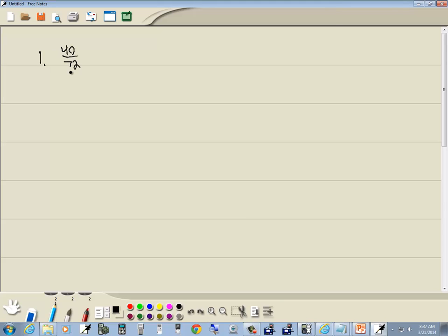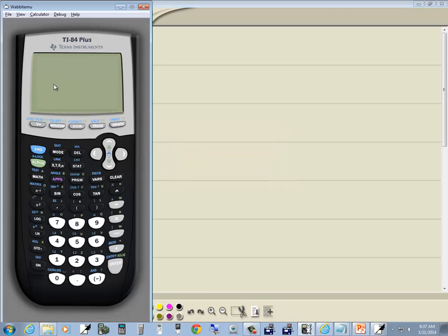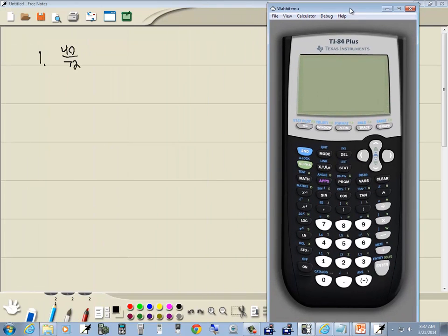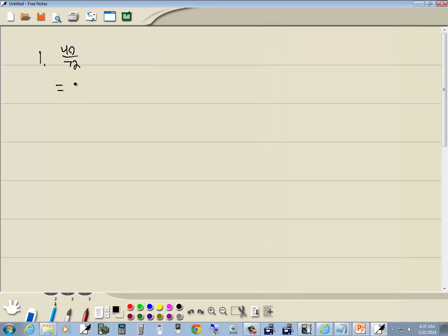Now we want to simplify this fraction. Fractions are very nice on the TI-83 and TI-84 models. To simplify this, I can do 40 divided by 72, and then if I press enter, you get a decimal. To change any decimal to a fraction, it's always math, enter, enter. So this reduces to 5 ninths.